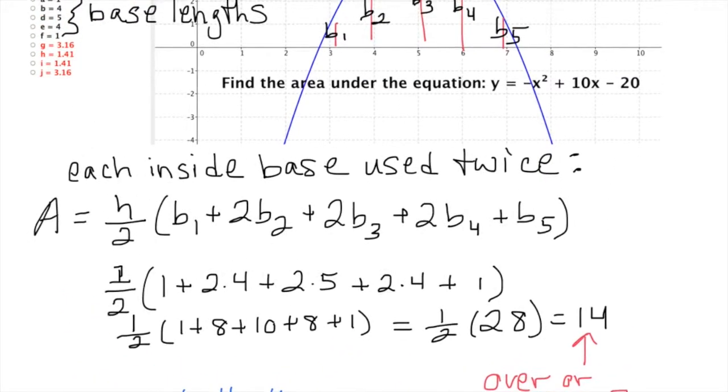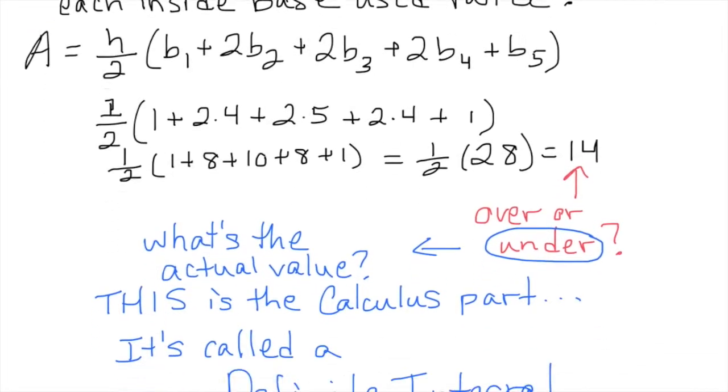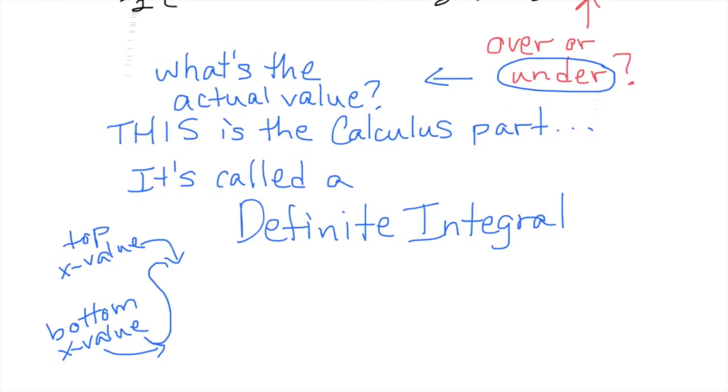So if we look back at our diagram here, you can see that that starting value is at 3, and the ending value is at 7. So we're going to take those numbers and stick them onto the definite integral here. 3 at the bottom and 7 at the top.